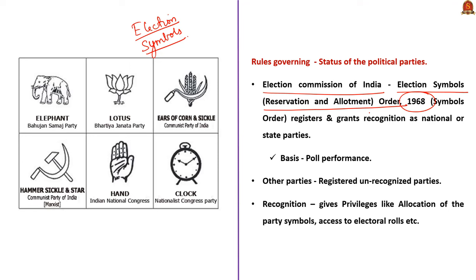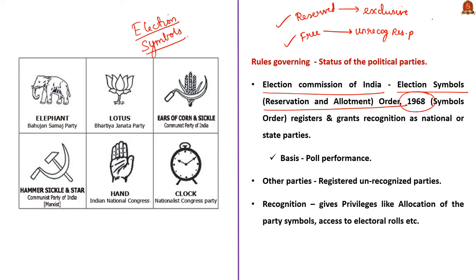There are two types of election symbols: reserved election symbols and free symbols. The reserved election symbols are exclusively assigned to recognized political parties, and the free symbols can be chosen by unrecognized registered parties. The recognized national and state parties are granted exclusive symbols which signify their established status. The election symbols were introduced to facilitate voting by illiterate people who can't read the name of a party while casting their votes.